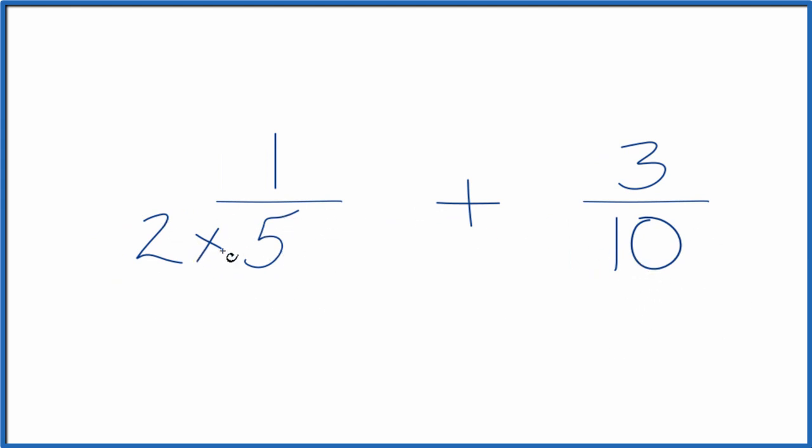But we can't just multiply the denominator here by two. We also need to multiply the numerator by two. That's because two divided by two is just one, so we're multiplying one-fifth by one. It doesn't change the value, just the way it's represented.